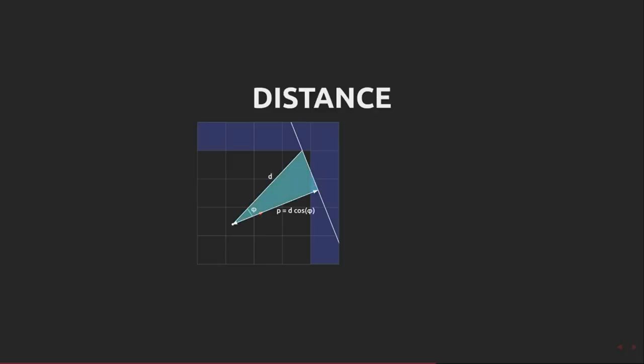The distance along the ray itself is d, and there's a relationship between d and p. p is d cos phi, where phi is the angle between the ray and the player's direction.